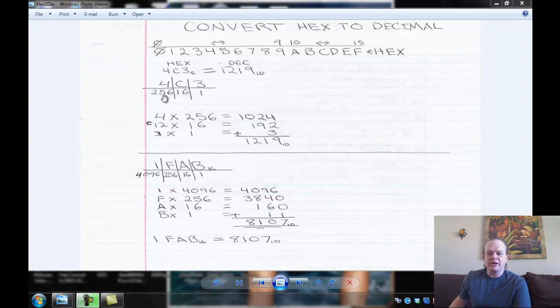256 is the weight for the third place in a hexadecimal number. In decimal, it would be the hundreds place. We have one, tens, hundreds, thousands in decimal.